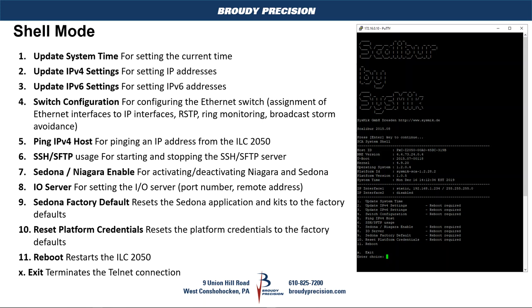In shell mode, looking at it from PuTTY, the menu has 11 items. Various ones are very similar to what you would do with a standard JACE. You can set the system time, IP settings — this device has a four-port switch built in so you can do switch configuration, assign each of the ports, and set it up for ring topology if necessary. You can also ping an IP address to verify that the ILC 2050 can reach other devices.